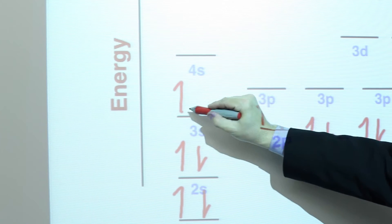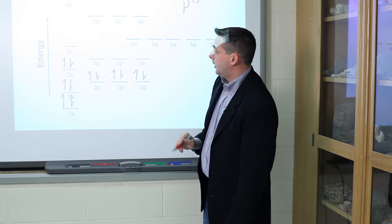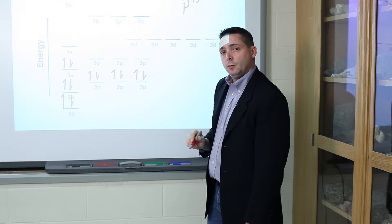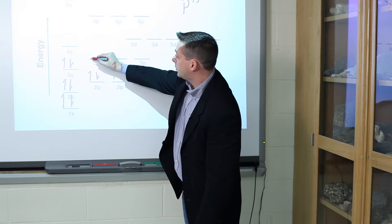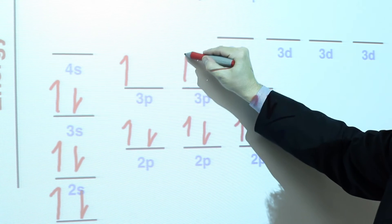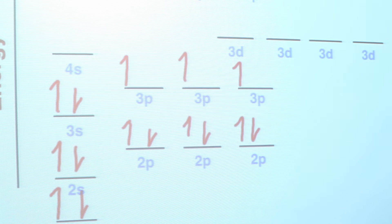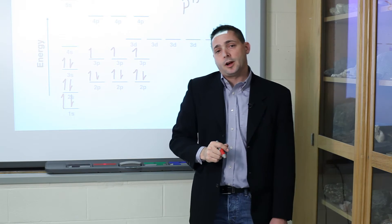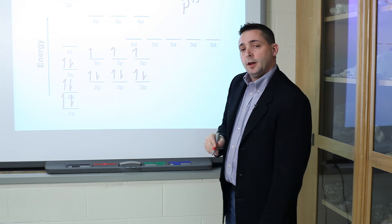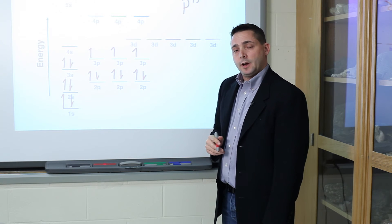3s: 11, 12, and then for the 3p orbitals, again, one electron at a time in each orbital: 1, 2, 3. And since that's 15 electrons, that's how we would complete the electron energy level diagram for phosphorus-15.